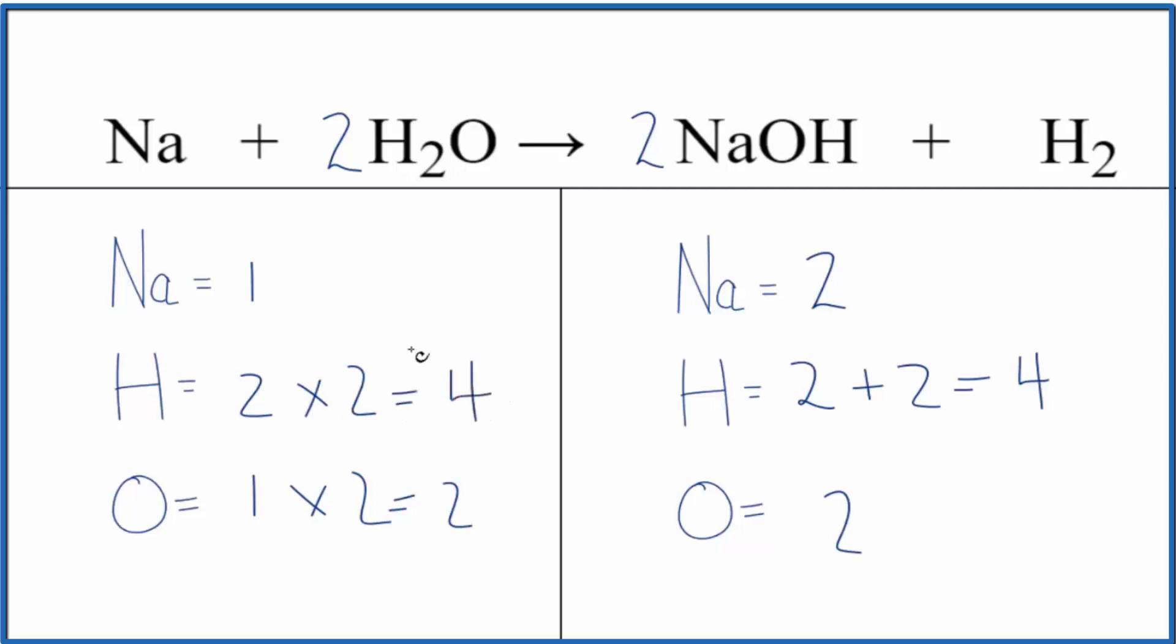We also need to balance the sodium here. So we'll put a two in front of the Na, one times two, that gives us two sodium atoms. If you wanted to write the states, they'd look like this.